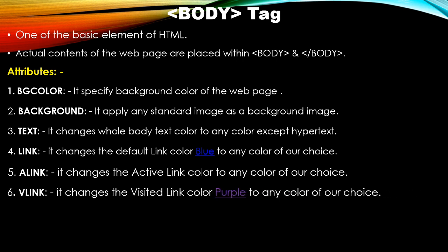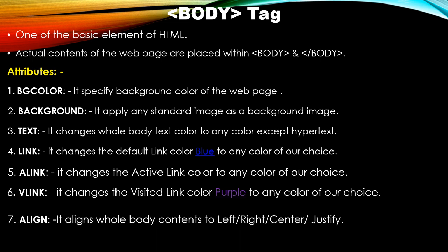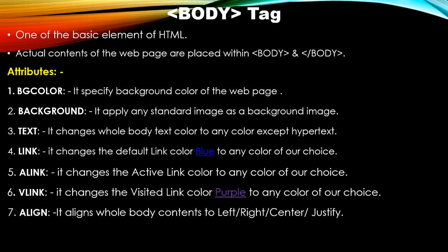The vlink attribute represents the visited link — once you visit a link by clicking on the hypertext and come back, the default blue color changes to purple. So the default visited link color is purple. You can use the vlink attribute to change this. The last attribute is align, which changes the whole alignment of the webpage content — values are left, right, center, or justify; default is left.